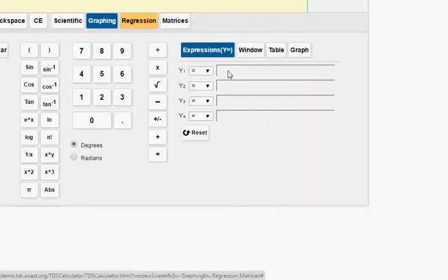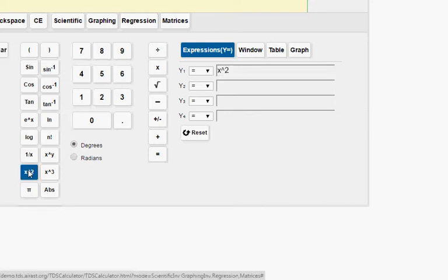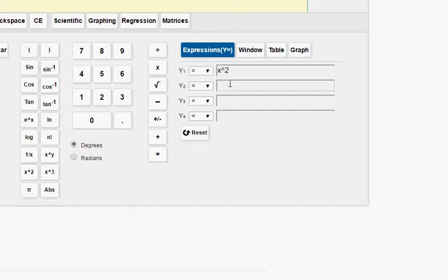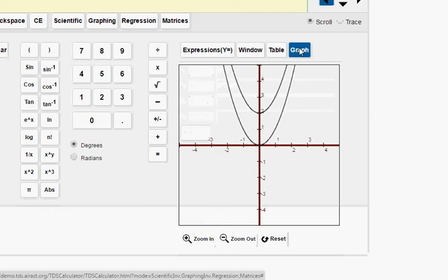And so if you pull the calculator up and you go to the graphing mode and you enter in one of the y menus, enter the x variable squared. And then in the next one, let's do the x variable squared, tack on a plus 2. And so if you go to look at the graph of this, what you'll see is that this is what happens.